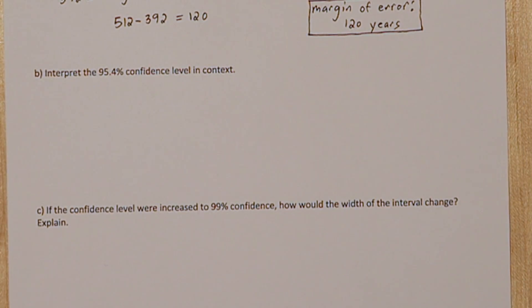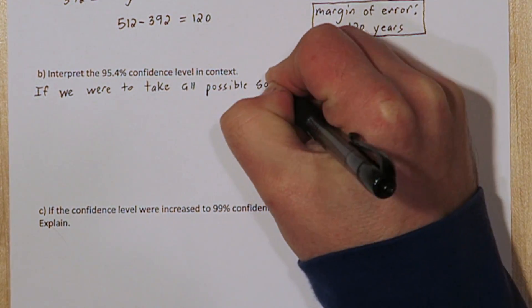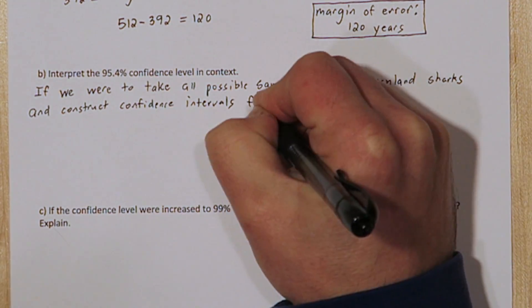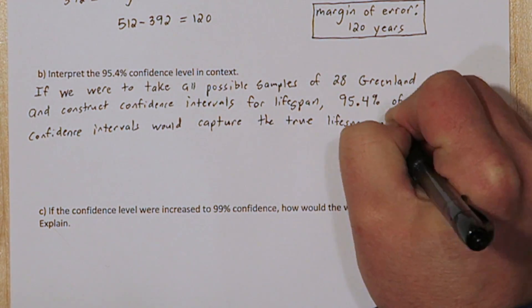The confidence level can be interpreted like this. If we were to take all possible samples of 28 Greenland sharks and construct confidence intervals for lifespan, 95.4% of the confidence intervals would capture the true lifespan of the Greenland shark.